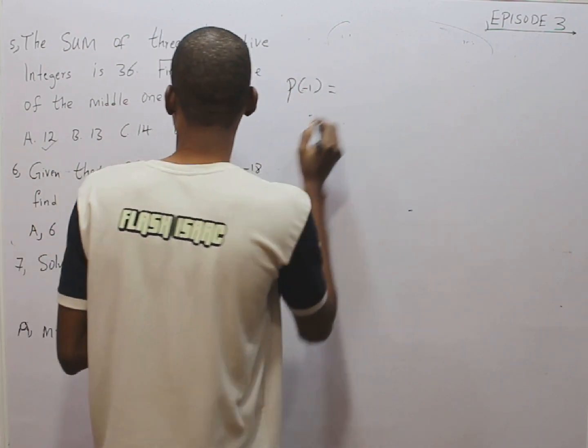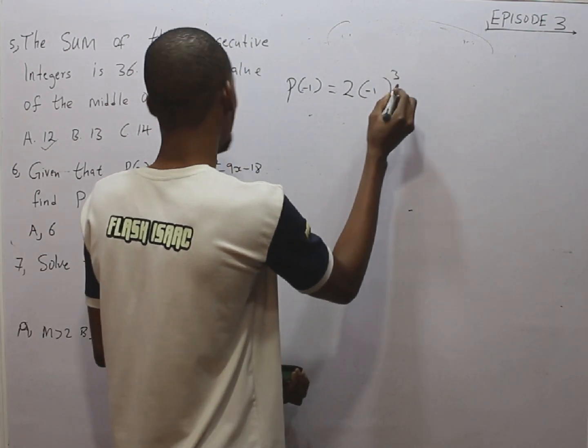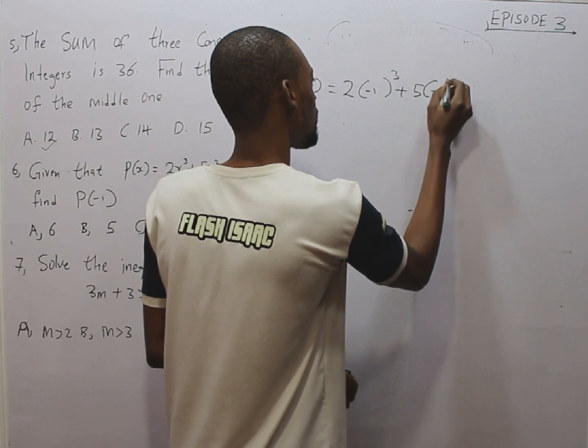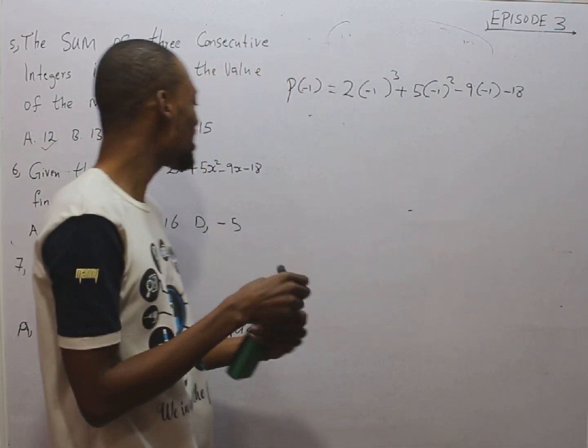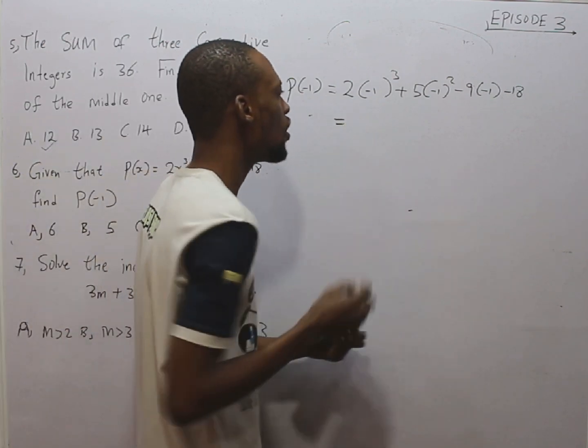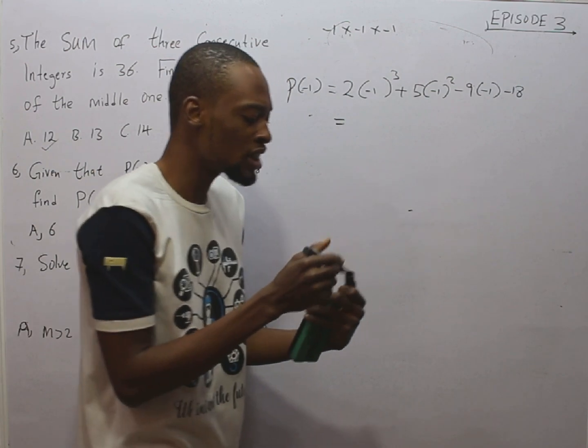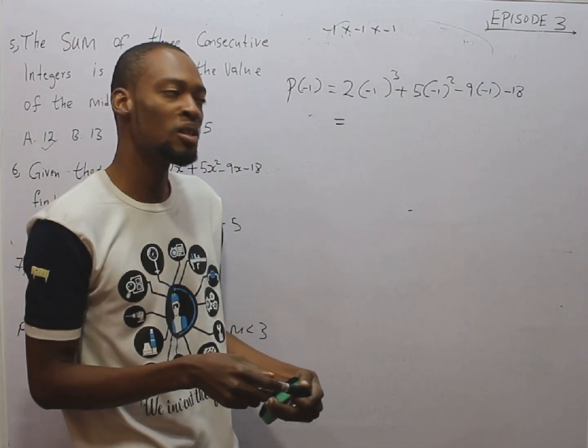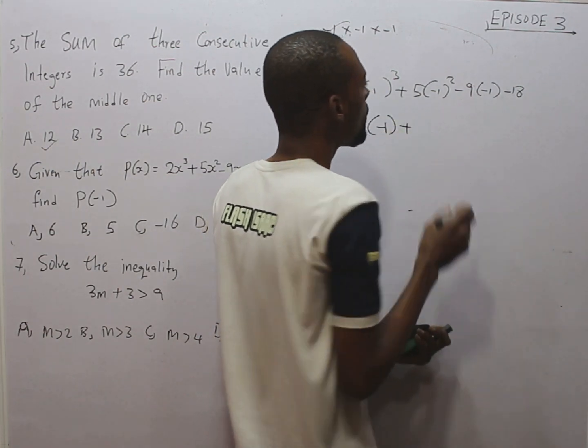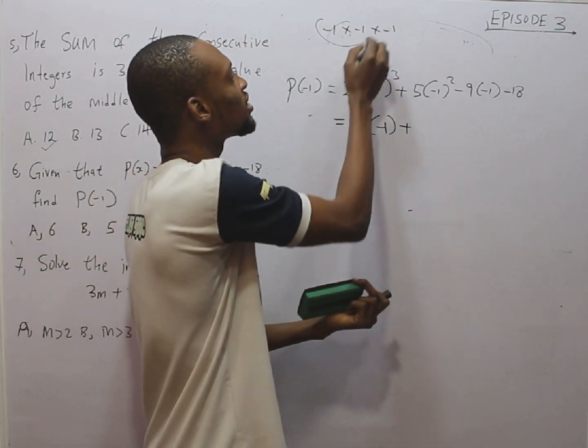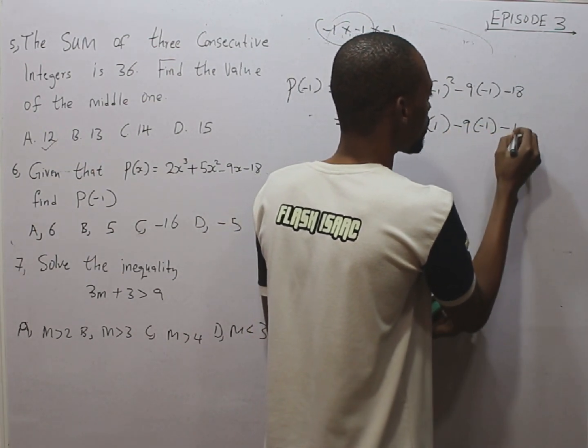So, P of minus 1 is simply equals, instead of 2x raised to the power of 3, it would simply be 2(-1) raised to the power of 3 plus 5(-1) raised to the power of 2 minus 9(-1) minus 18. We have successfully substituted. Now, this is equals to, -1 raised to the power of 3 is -1. So, giving us 2(-1) plus -1 raised to the power of 2 is 1. So, 5(1), minus 9(-1), minus 18.